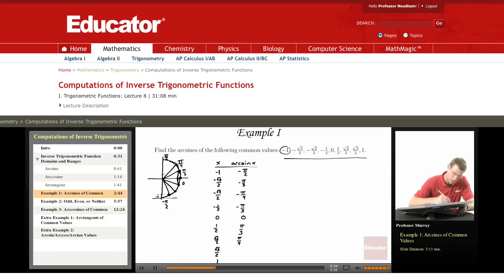And √3 over 2, that's our 60 degree angle, also known as π over 3.